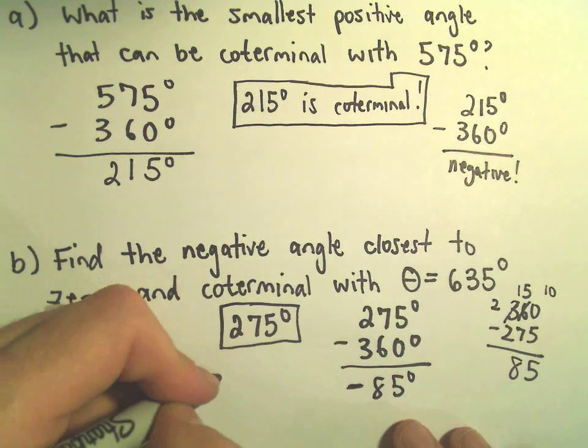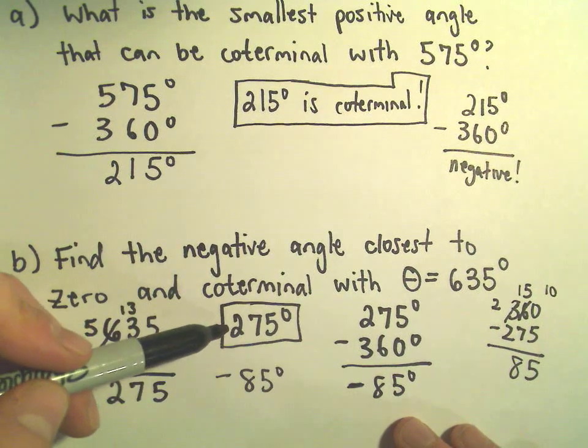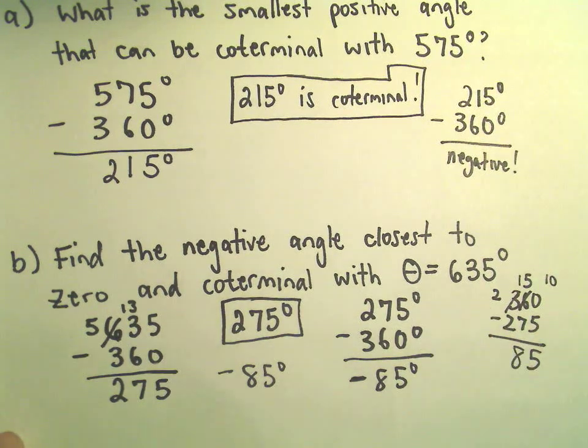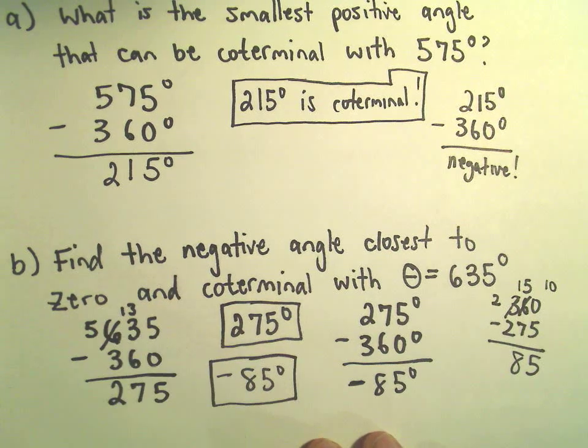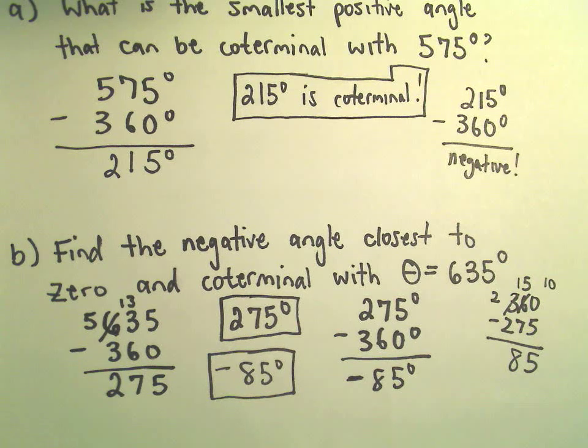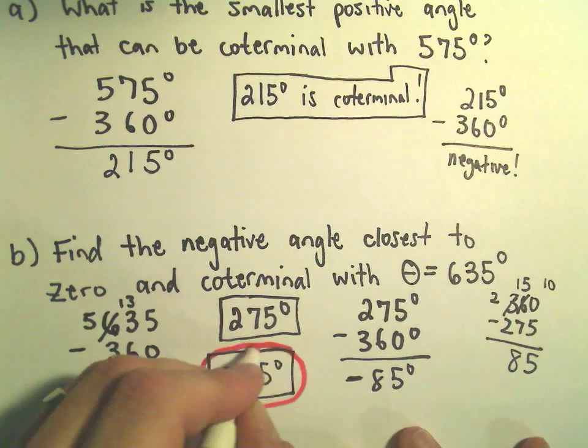So negative 85 degrees is also coterminal with the angle 275 degrees, which is also coterminal with 635 degrees. But now this is going to be the negative angle that's closest to 0. So I would say negative 85 degrees is my answer in this case.